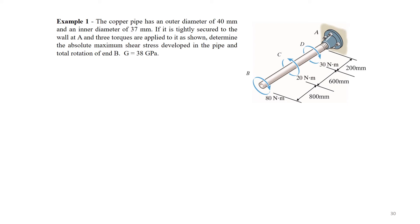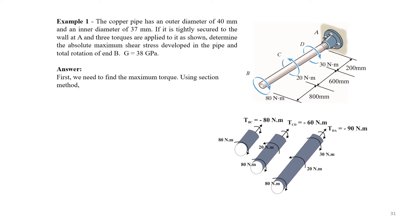determine the absolute maximum shear stress developed in the pipe and total rotation of end B. The shear modulus of elasticity G is given 38 gigapascals. First, we need to find the maximum torque. Using section method, the maximum torque is 90 Nm.